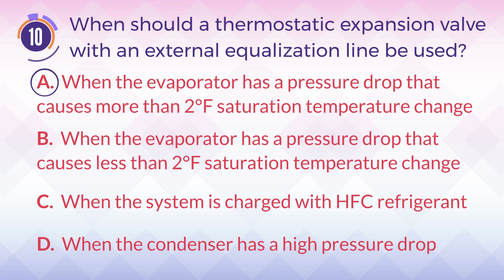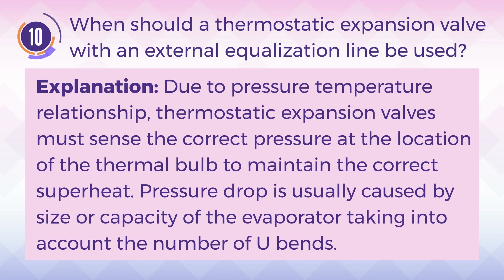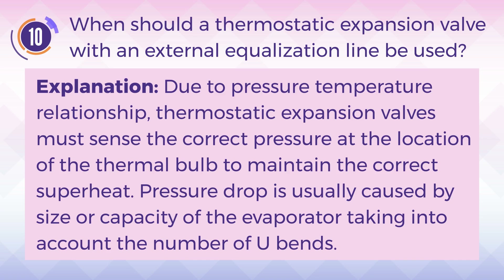The answer is A. When the evaporator has a pressure drop that causes more than 2 degrees Fahrenheit saturation temperature change. Explanation: Due to the pressure-temperature relationship, thermostatic expansion valves must sense the correct pressure at the location of the thermal bulb to maintain the correct superheat. Pressure drop is usually caused by the size or capacity of the evaporator, taking into account the number of U-bends.